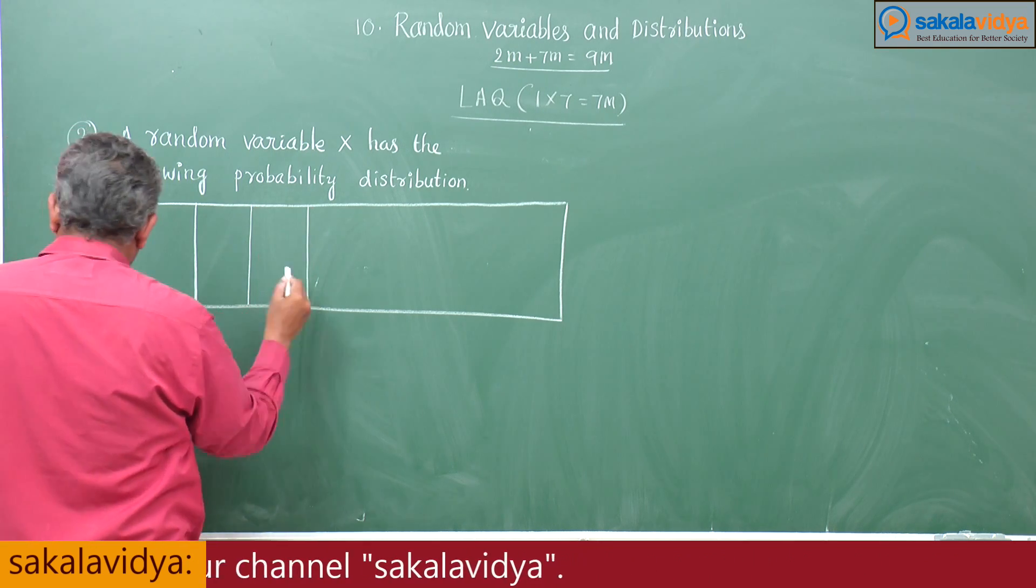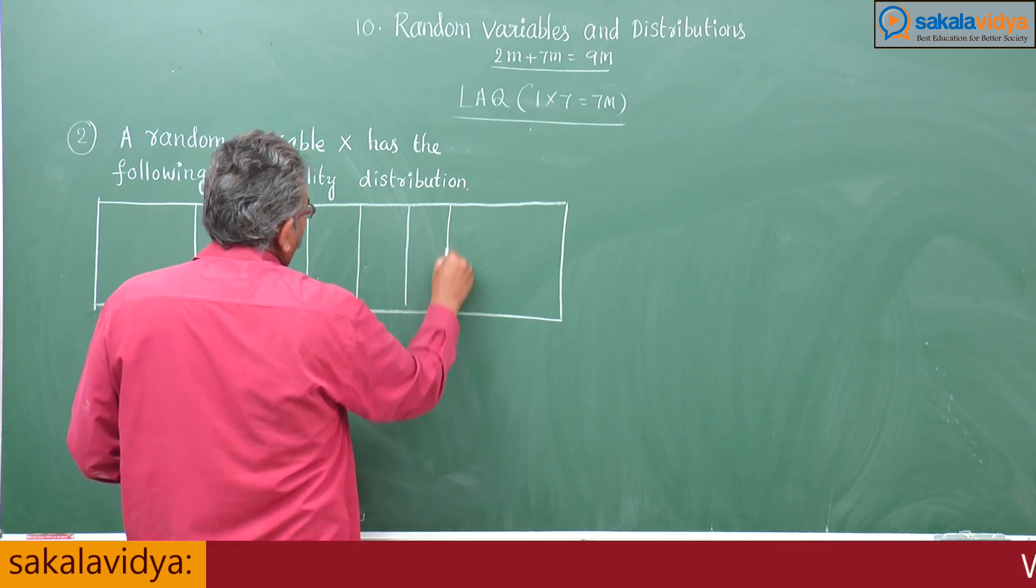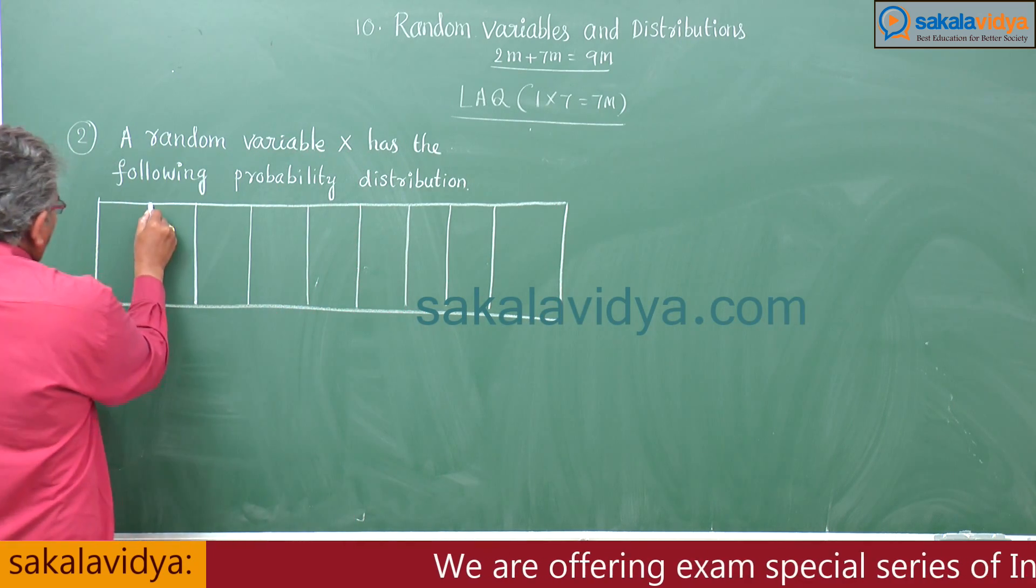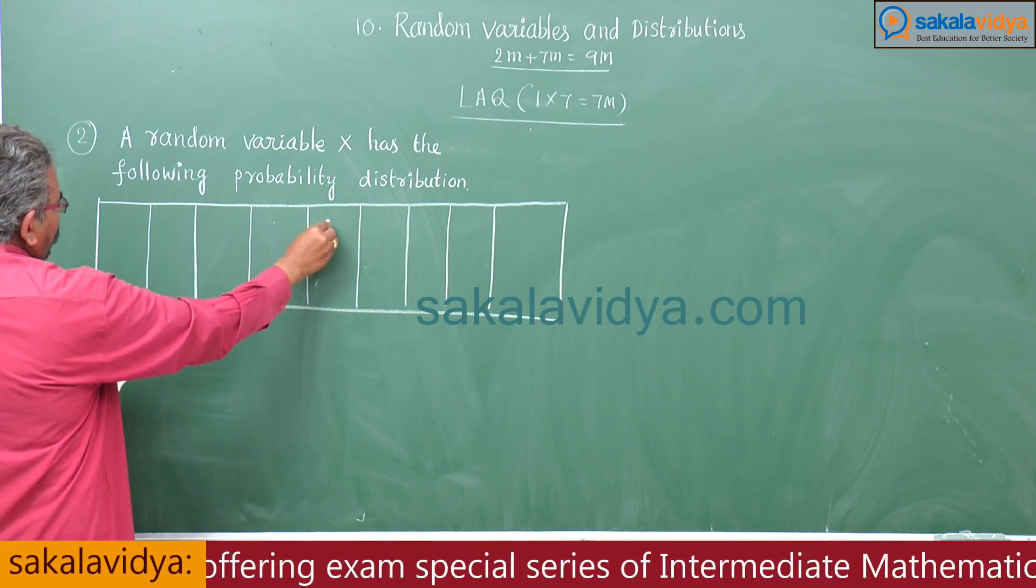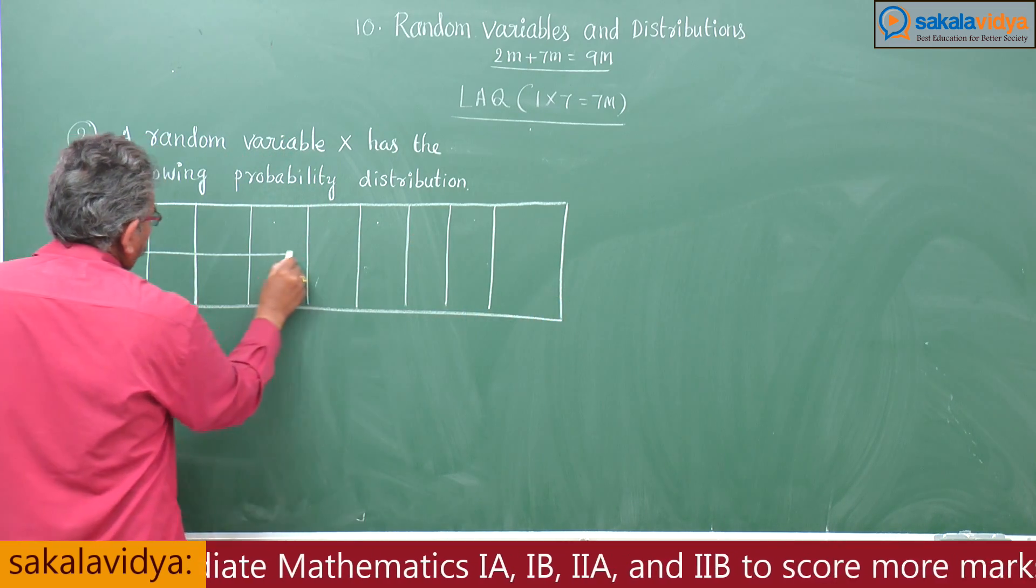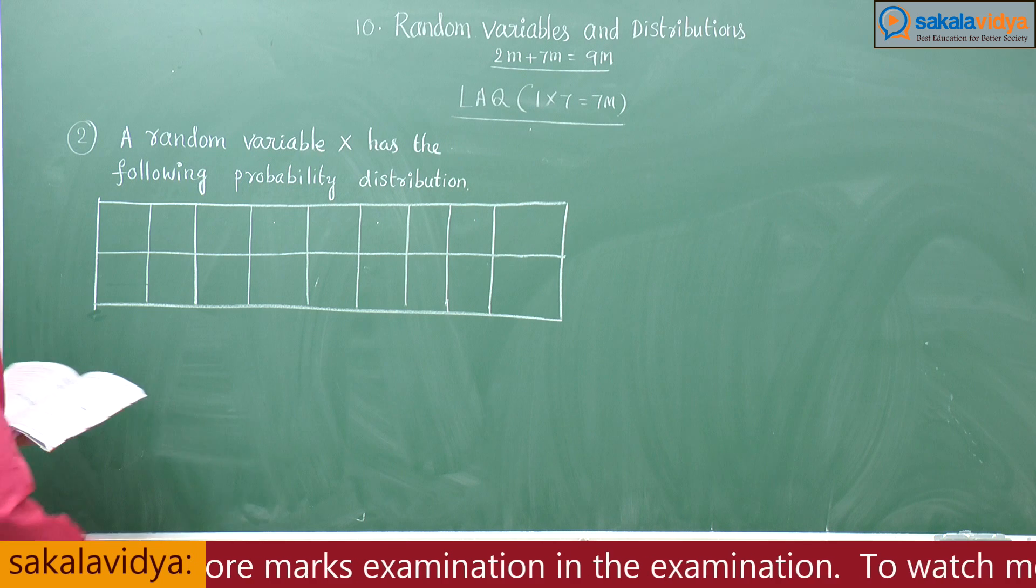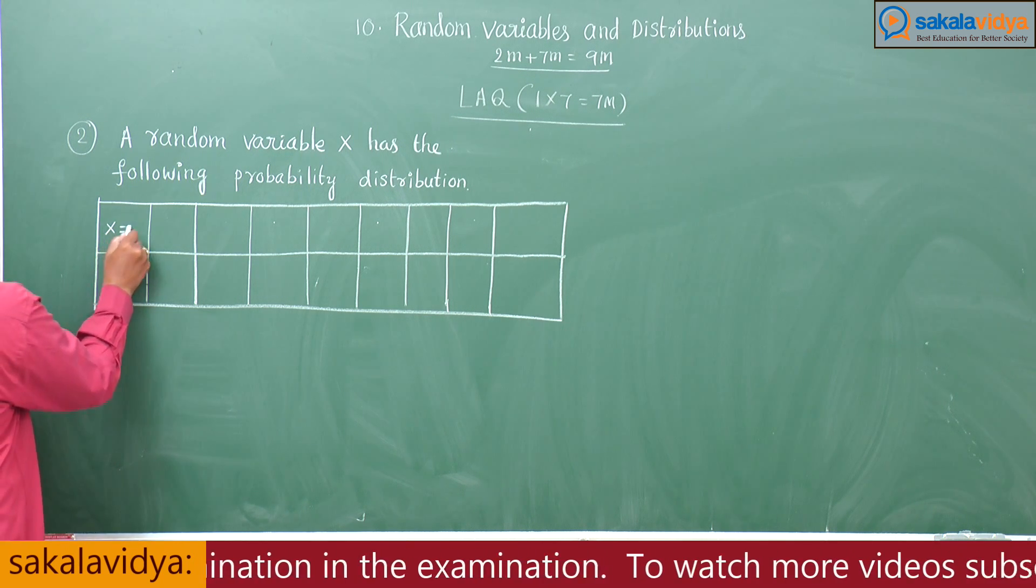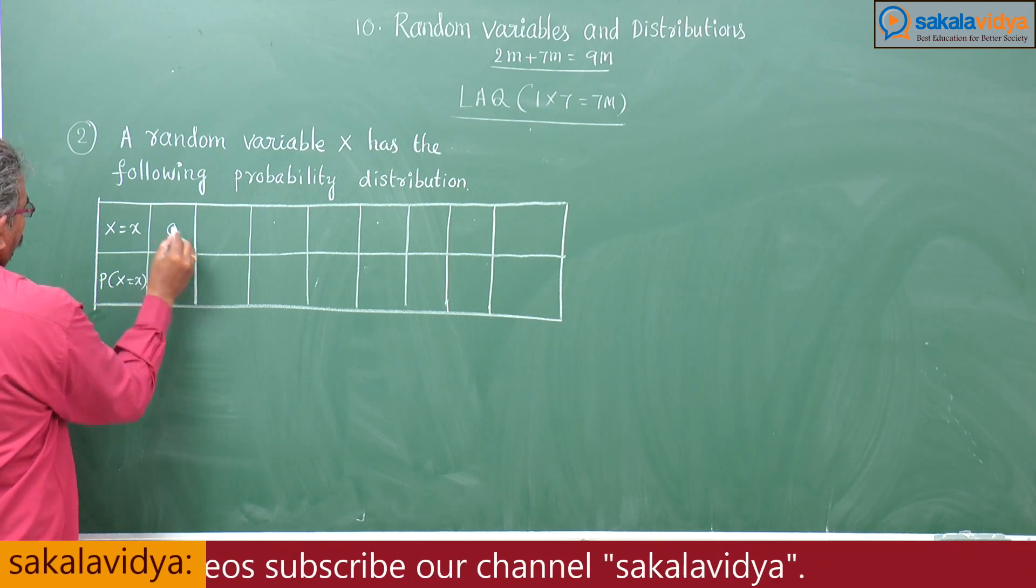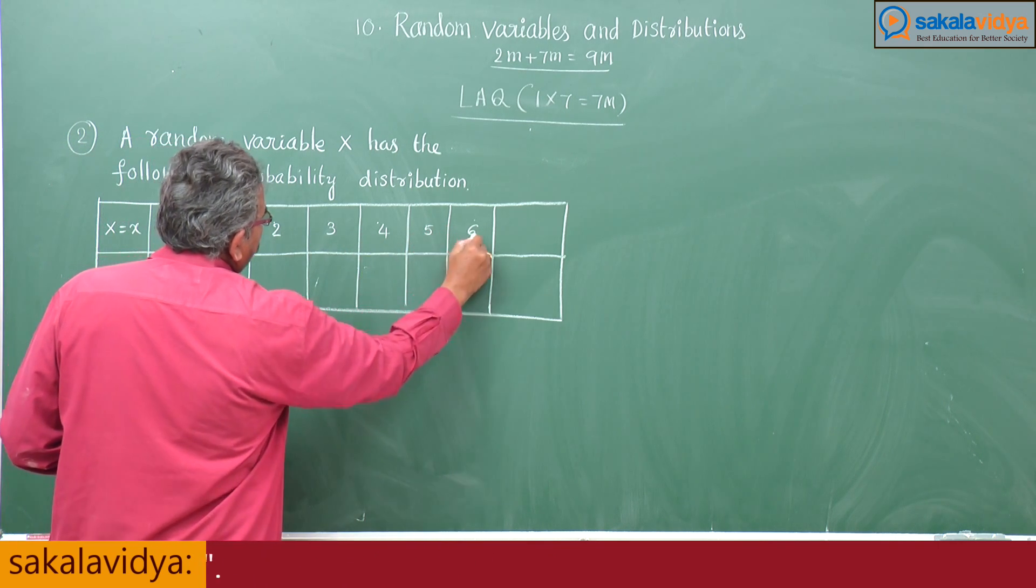The table has X values: 0, 1, 2, 3, 4, 5, 6, 7. And P of X equals X: 0, 1, 2, 3, 4, 5, 6, 7.